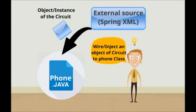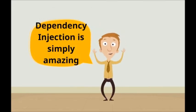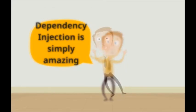So here comes dependency injection as a solution. If we apply dependency injection to this scenario, we do not have to create an object of the circuit class inside our phone class. What we have to do is wire or inject a circuit object into our phone class by using a third party — and normally it's the XML file. So it's kind of like we outsource the instantiation of our circuit class. We no longer create objects of the necessary components inside our phone class; instead, we inject or wire objects into it. By using this method, we can remove the tight coupling we had between the classes.